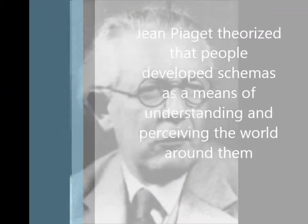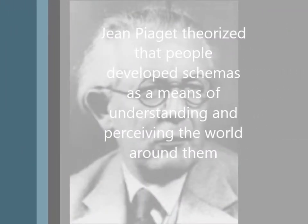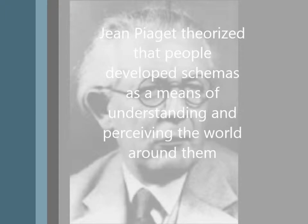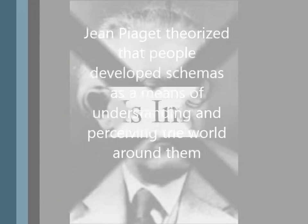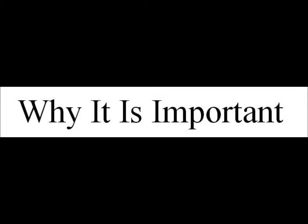Jean Piaget theorized that people create knowledge structures called schemas, which are altered by experiences through the processes of assimilation and accommodation to achieve equilibrium. His theories attempt to explain how children come to make sense of the world and learn. This is important to adolescent psychology because it helps us understand the thought process of kids.